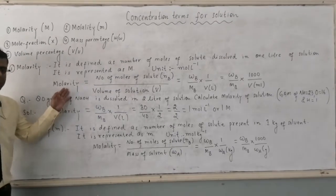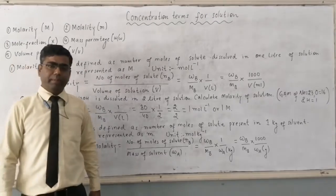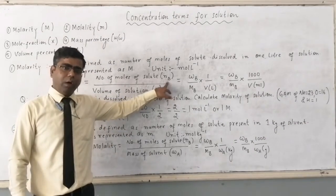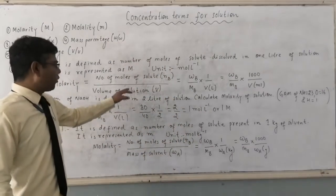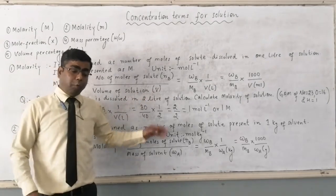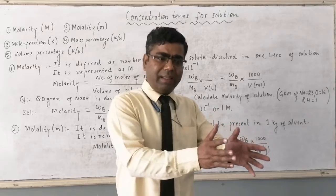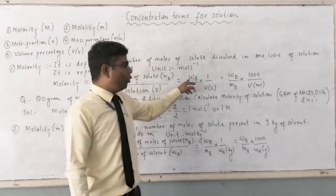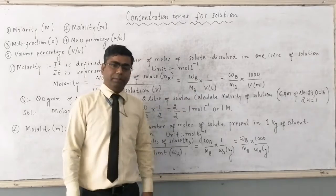The formula for molarity can be written as: molarity equals number of moles of solute divided by volume of solution. We always use subscript B for solute and subscript A for solvent. So number of moles of solute is n_B and volume of solution is V. Number of moles can be calculated as mass of substance (W) divided by molar mass (M). Sometimes volume is provided in milliliters, so we convert to liters by dividing by 1000. The formula then becomes: molarity = W_B / M_B × 1000 / V(in mL).